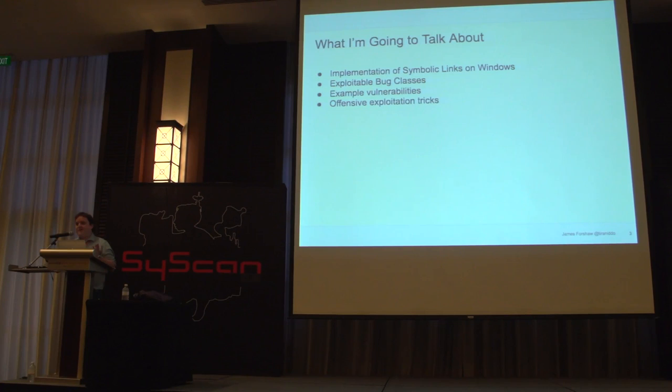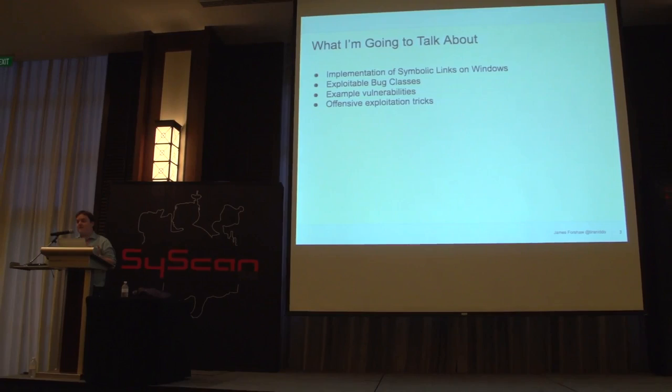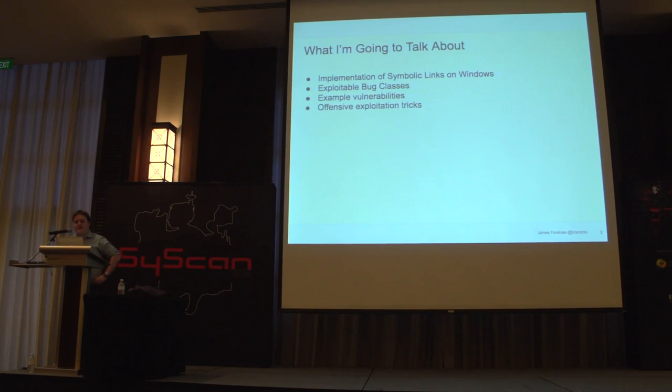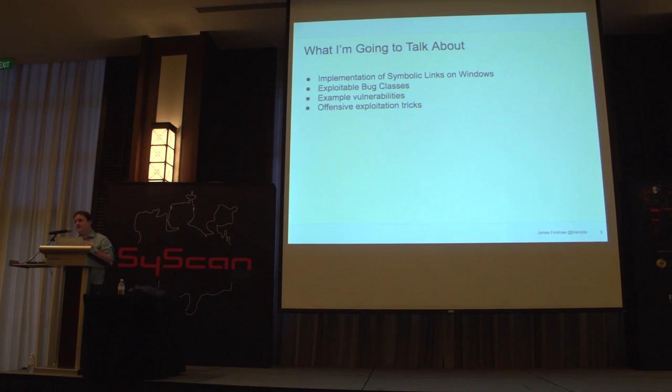So what am I actually going to talk about? I'm not going to talk about symbolic execution or anything like that. I'm not going to talk about link files, even though that's been quite a recent popular thing, as the son of Stuxnet has come back. I'm talking about symbolic links on Windows — what symbolic links you can use for exploitation purposes, exploitable bug classes, example vulnerabilities as case studies, and various offensive exploitation tricks you can use to exploit these vulnerabilities reliably and easily.